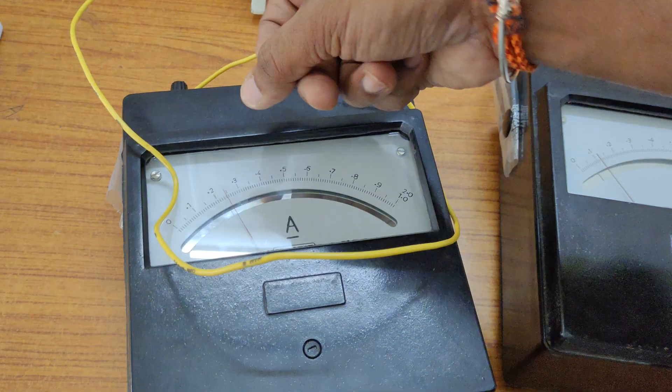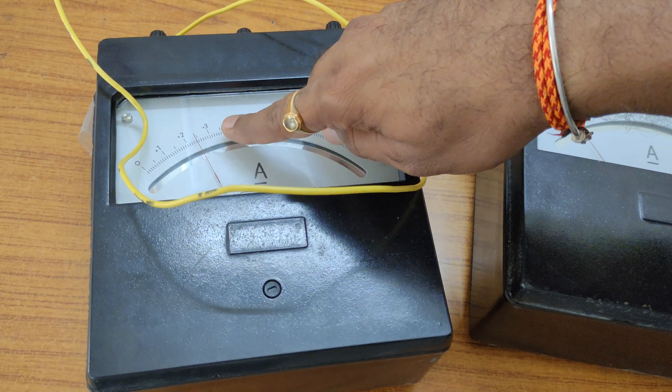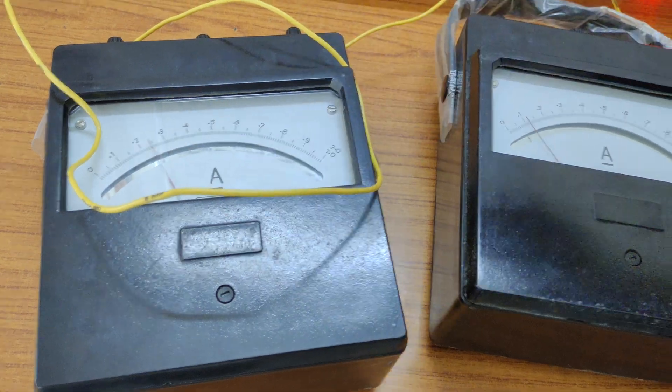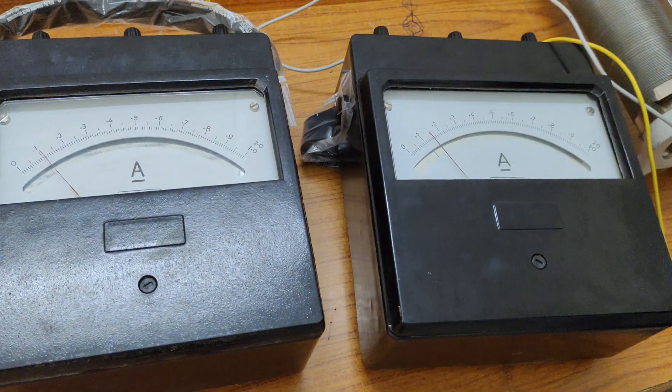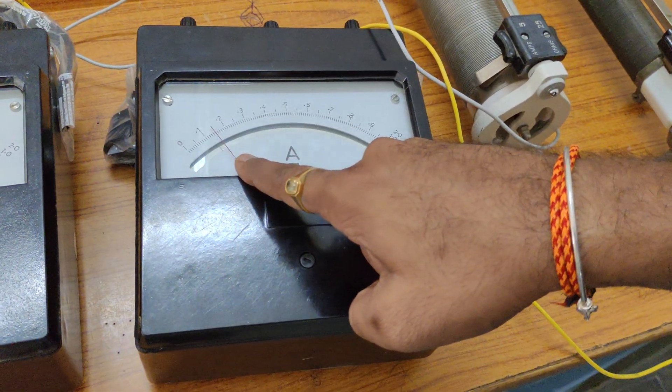You can easily observe this scale here. Between 0.2 to 0.3, it shows 0.25 now, before one line is 0.24. This one is 0.1 and this one here is 0.14.